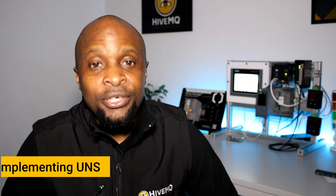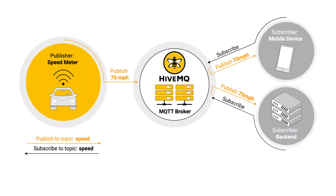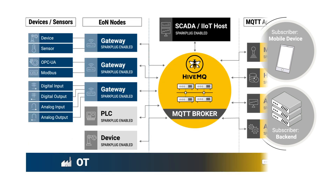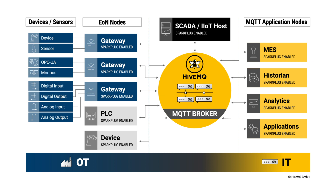MQTT is the most commonly used messaging protocol for the Internet of Things. The protocol is lightweight, event-driven, and connects devices using the publish-subscribe communication pattern. Data producers and consumers communicate via topics through a centralized server and MQTT broker. MQTT Sparkplug B is an open-source software specification that provides MQTT clients with a framework to seamlessly integrate data from applications, sensors, devices, and gateways within an MQTT infrastructure in a bi-directional and interoperable way.